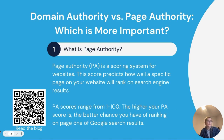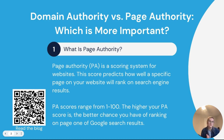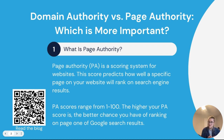Page authority — what is page authority? Page authority is a scoring system that measures how well a specific page will rank in search engine results, for example, a blog post. PA scores range from 1 to 100, and the higher your score is, the better chance you have of being on page number 1. This scoring system was created by Moz. It weighs the scores on a logarithmic scale, which means that it's easier to grow from 20 to 30 than it is from 70 to 80.